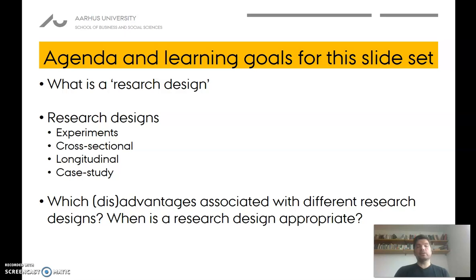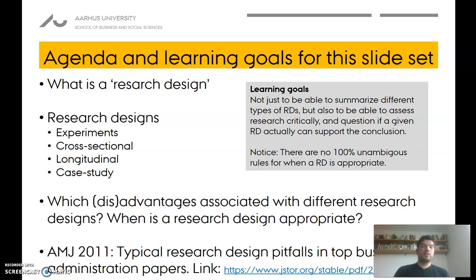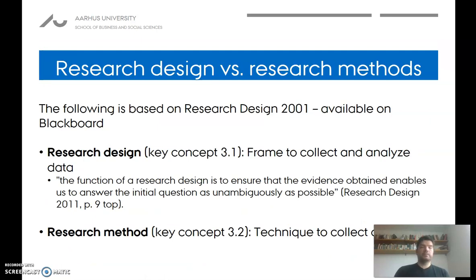What I want to do in this first video is outline what a research design actually is, go through the four core prototypical designs — we've already covered experiments, so I won't repeat that — and cover their characteristics, strengths, and weaknesses, and when each design is appropriate. The learning goal is not just to define what a cross-sectional study is, but to engage in critical thinking: due to the nature of a cross-sectional design, it may not be appropriate in a given situation.